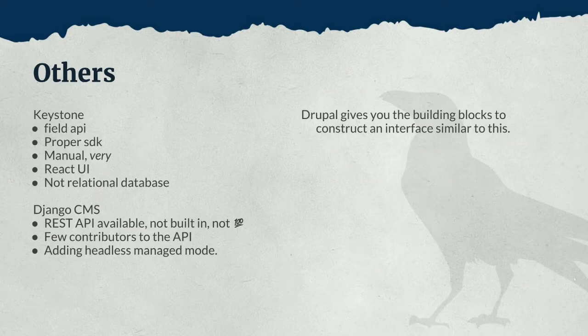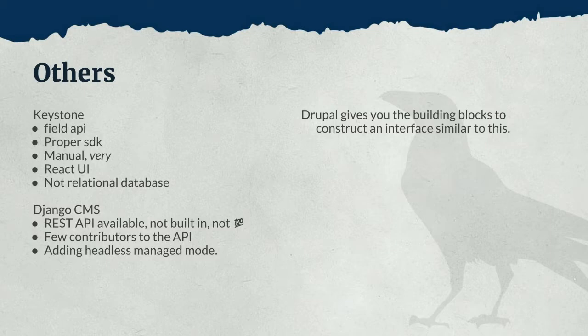The other one we looked at is Django CMS — another popular option that has a field API type interface. They don't have a REST API as part of their core offering; it's an initiative being worked on only by a couple of people. But what they have done is say in their roadmap they want to add headless managed mode to Django CMS, which means any kind of configurations you do with the CMS they want to be able to do in a decoupled architecture — so you could have a React application instead of any kind of theme layer to manage your CMS.